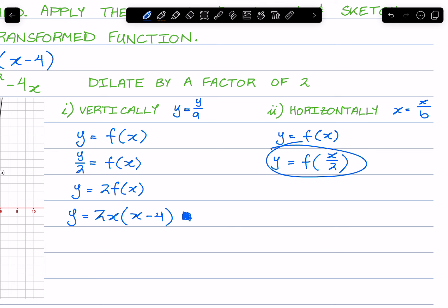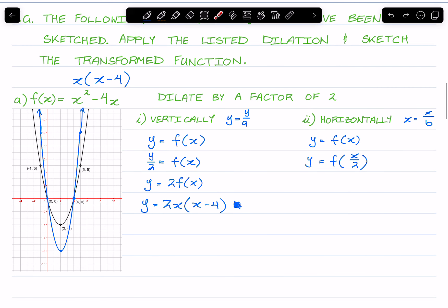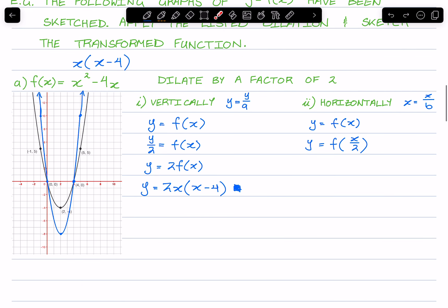So we already have a fully simplified version. We are now going to substitute x over 2 back into our original form here. So this will become y equals x times x minus 4.